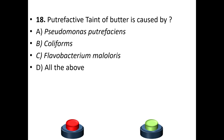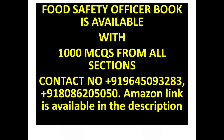Eighteenth question: putrefactive taint of butter is caused by A: Pseudomonas putrefaciens. B: Coliforms. C: Flavobacterium malodoratum. D: All of the above. The answer is D — all of the above.